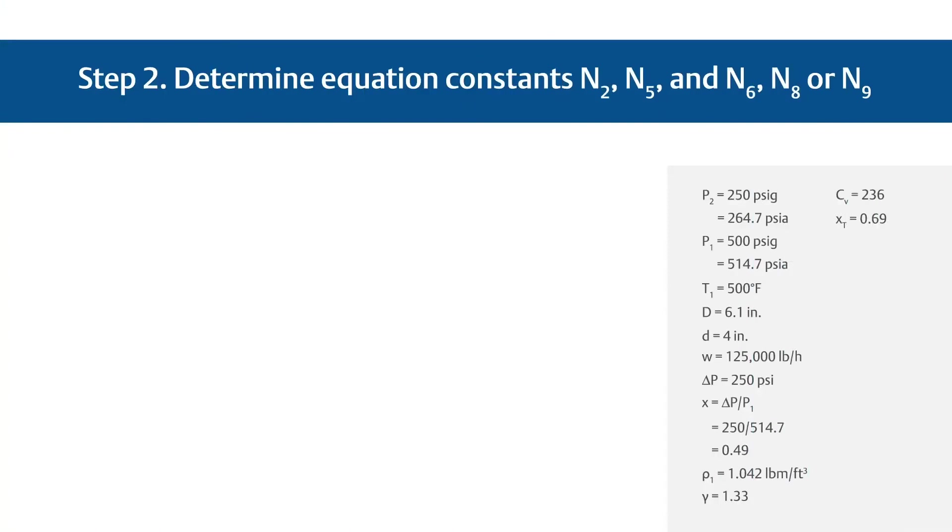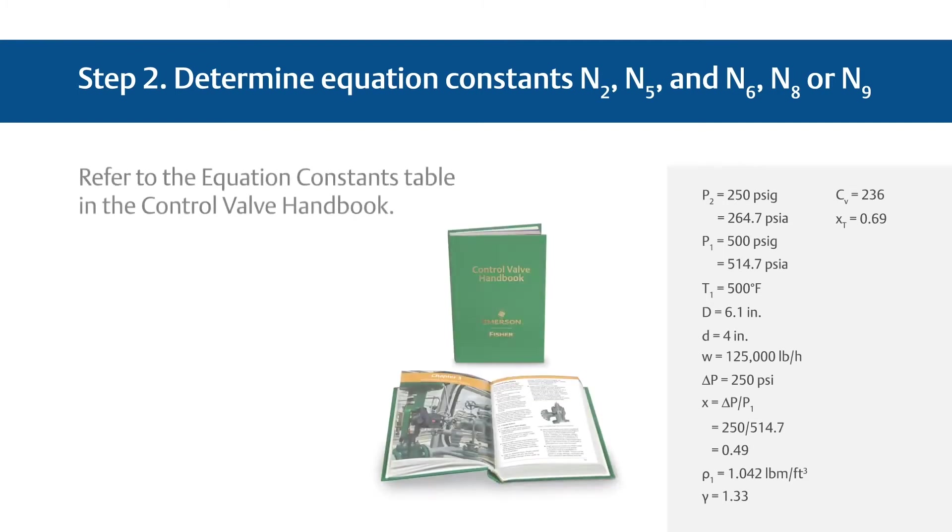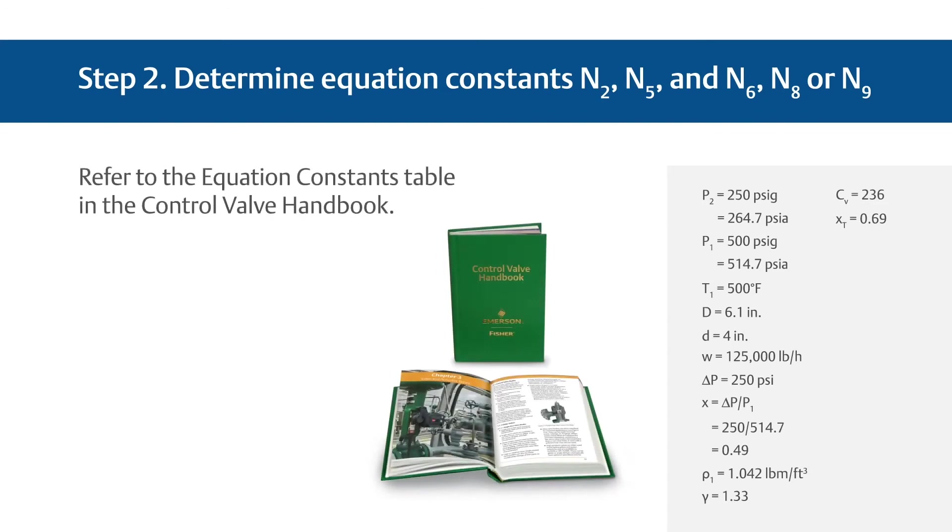Start by trying an NPS 4 or DN 100 Fisher ED valve with linear trim at 100% travel, where CV equals 236 and X sub T equals 0.69. For Step 2, determine the equation constants N sub 2, N sub 5, and N sub 6, N sub 8 or N sub 9. From the equation constants table in the control valve handbook, we can see that N sub 2 equals 890 and N sub 5 equals 1000. When mass flow rate is given in pounds per hour and density is given in pound mass per cubic foot, use N sub 6, which equals 63.3.